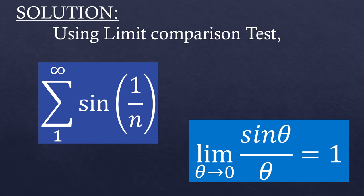So to use this result, we just need to divide the series sine of 1 by n by theta, which is another series, and that is 1 by n here. This method of taking the ratio of two series is comprehended in the Limit Comparison Test, which is why I am using it. Easy?